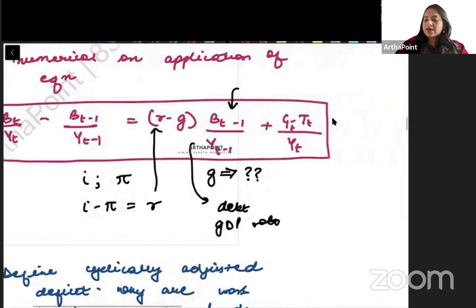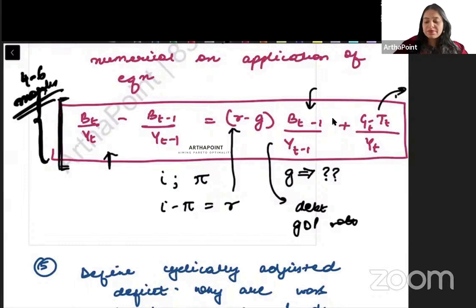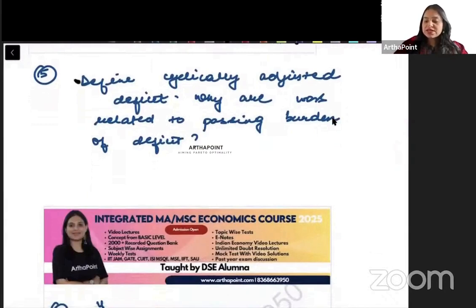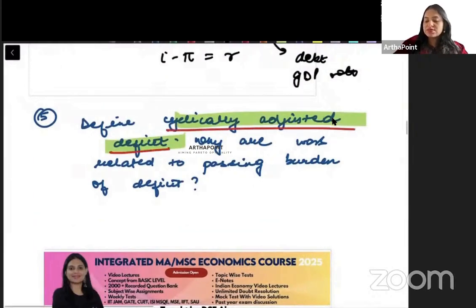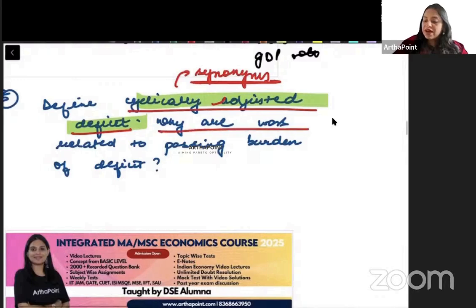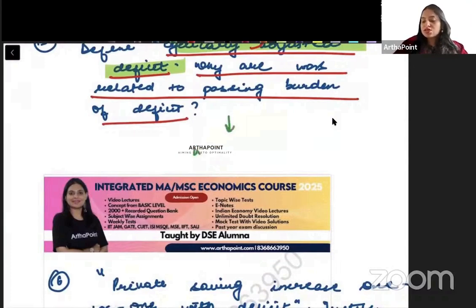Right? And they will ask you what is required. How much primary surplus to GDP would be required to get a particular value here. Why are wars related to passing burden of deficit? Toh wahaan per in your book you have a section. Which says wars and deficits.